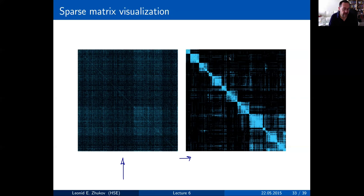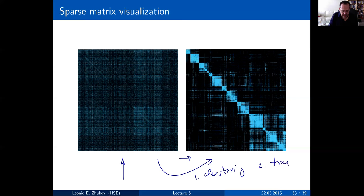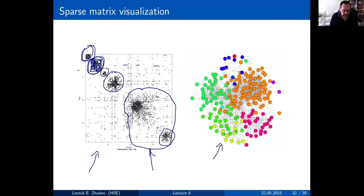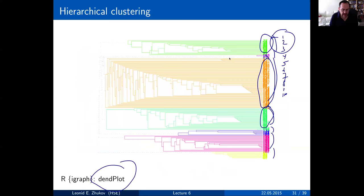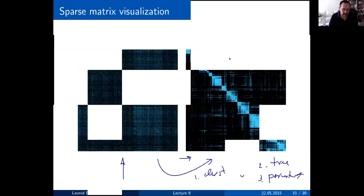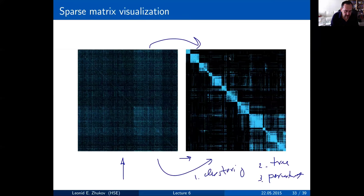Here is an example with a matrix corresponding to a graph of about 10,000 nodes — I cannot draw it directly. I run a cluster algorithm, get hierarchical clustering, do the permutation, and you start seeing structures. This is extremely, extremely powerful technique. In iGraph, the dendrogram plot command gives you that tree after clustering, and you can extract the ordering to permute the adjacency matrix.